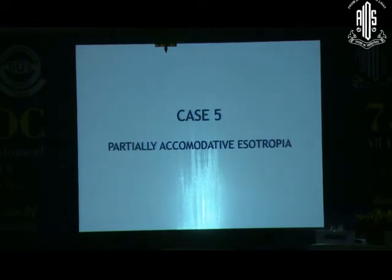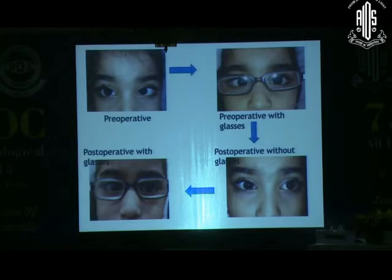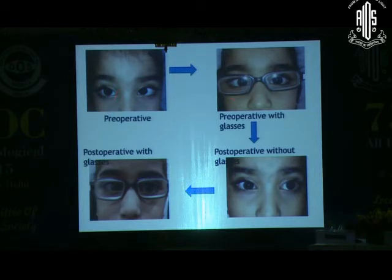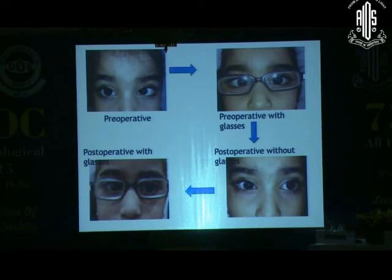The next case is the partially accommodative esotropia. This is a case where you've given proper cycloplegic correction, but an esotropia still continues. So what remains is an esotropia after proper optical correction — then you do surgery. However, even after surgery, if they don't wear the glasses they'll continue to have an esotropia. So the actual treatment is glasses plus surgical correction. Remember in these cases: first glasses, whatever squint remains after glasses gets operated, and then they need to continue wearing glasses even after surgery. You must tell the parents, guardians, and patient that this is necessary.